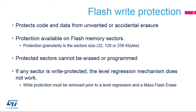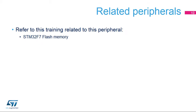The write protection protects code and non-volatile data from unwanted or accidental erasure. This protection is only available on the flash memory. Unlike readout protection, the write protection can be set on a selection of flash memory sectors only. There are 8 sectors defined in STM32F7: 4 sectors of 32 kilobytes, 1 sector of 128 kilobytes, and 3 sectors of 256 kilobytes. When a sector is protected, it cannot be erased or programmed — any attempt to write access the sector will cause a flash memory error. If at least 1 sector is write protected, a mass erase of the flash memory cannot be performed; the protection needs to be removed first. Please refer to the flash memory training to learn more about the memory architecture, option bytes, and flash operations.